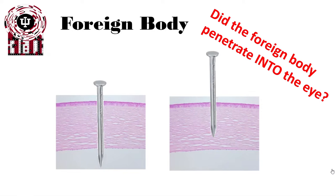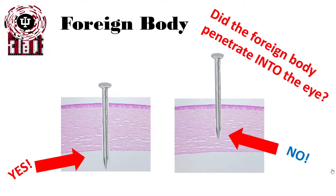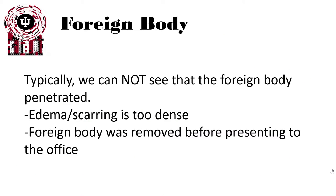The key question we always want to ask is: did the foreign body penetrate into the eye? In this mock example, we see a nail going all the way through the cornea versus only partway through. Typically, we can't determine this because edema and scarring are often too dense to see whether there is full or partial penetration. Additionally, the foreign body is often removed by the patient before they present to the office.